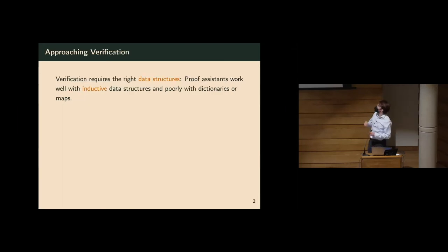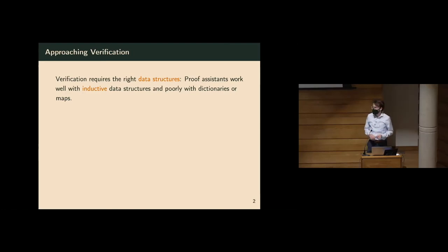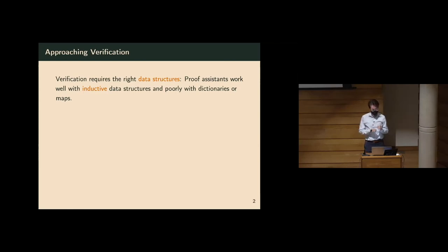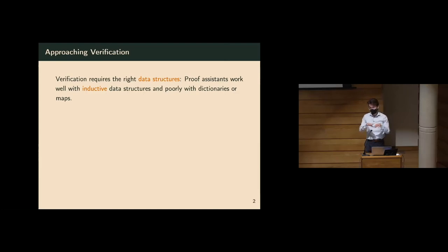So if you believe there's a point to verifying this, you have to look at how you can actually do this verification. We use a proof assistant called Coq. In Coq, verification works very well with things like inductive data structures, but very poorly with things like dictionaries and maps, where the underlying implementation might be obfuscated by some interface.